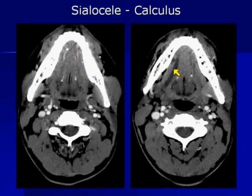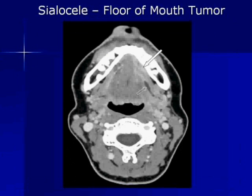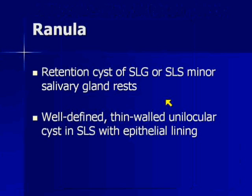You can miss a stone on MRI, so if you see a dilated duct and suspect a stone, get a CT. If you don't find a stone on CT, be very careful — don't miss the other etiology. Here is a case of a tumor in the floor of mouth; this is cancer, and you can see obvious distension of the left submandibular gland duct, which is Wharton's duct, dilated all the way back into the substance of the submandibular gland.